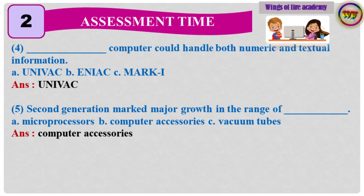4. Dash computer could handle both numeric and textual information. A. Univac. B. ENIAC. C. Mark I. Answer: Univac. 5. Second generation marked major growth in the range of dash. A. Microprocessors. B. Computer accessories. C. Vacuum tubes. Answer: Computer accessories.